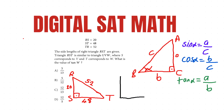The rest of the problem refers to a similar triangle named UVW. Triangle RST is similar to triangle UVW, where S corresponds to V — both are 90 degrees. T corresponds to W. So we need to find the value of tan W.